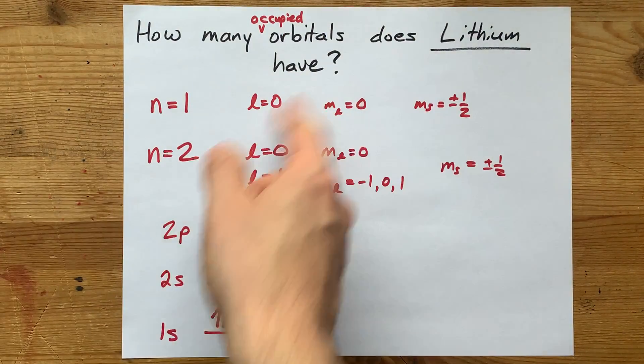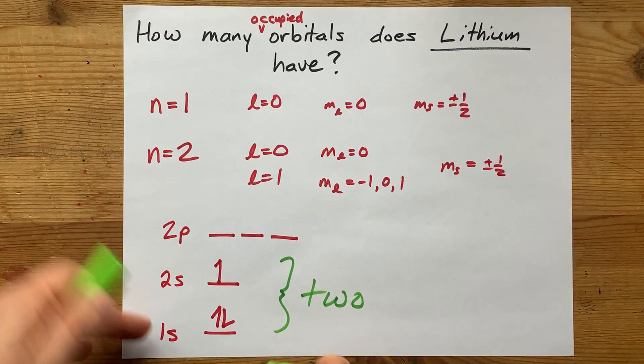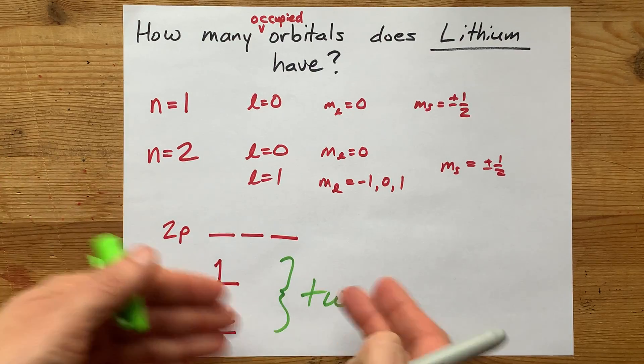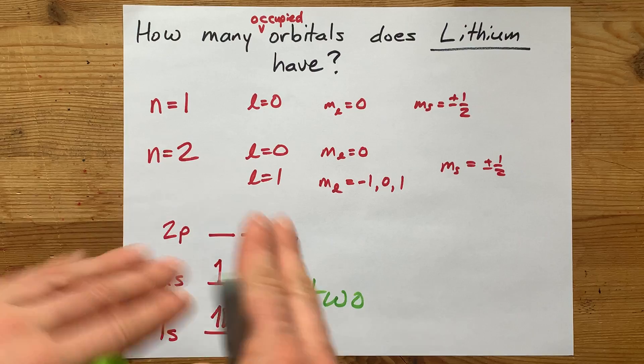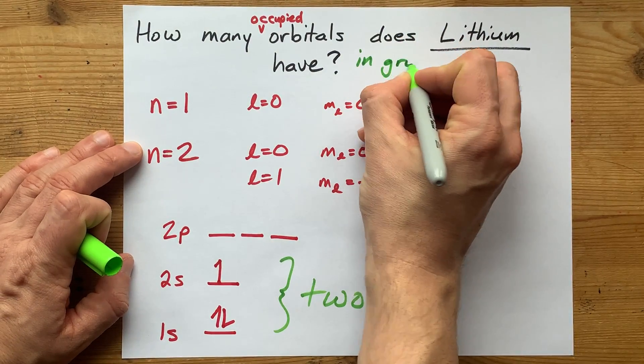how many occupied orbitals does lithium have? It's two. There are two of them. The 1s orbital is full, and then the 2s orbital is half full, and those are the only ones that have electrons in the ground state.